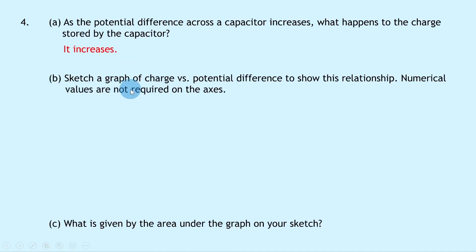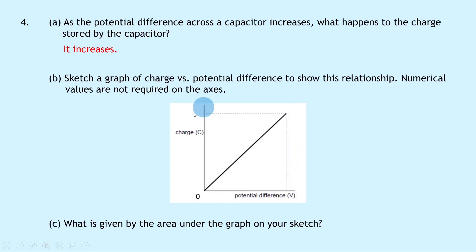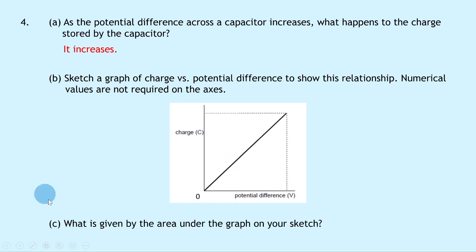Part B says to sketch a graph of charge versus potential difference to show this relationship. Numerical values are not required on the axes. Our graph should have charge on the y-axis against potential difference on the x-axis, with a straight line going through the origin.